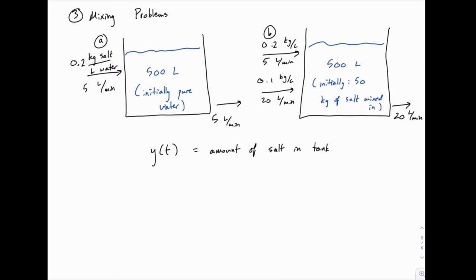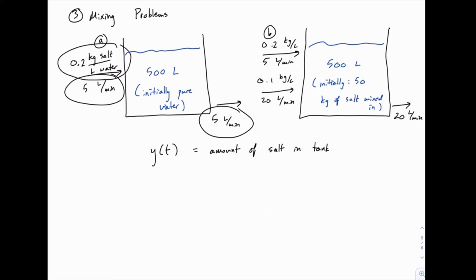Initially this tank holds pure water. Then a valve is opened and into this tank pours 5 liters per minute of a mixture of salt and water. It mixes throughout, and then an outlet also carries 5 liters per minute out. We'll assume it's thoroughly mixed at all times. So 5 liters enters every minute, 5 liters exits every minute, and as time goes on, this water gets saltier and saltier, approaching the level of salt in the inlet flow.